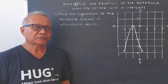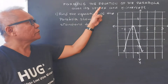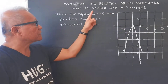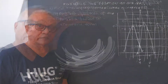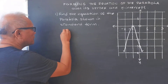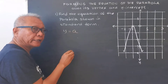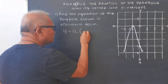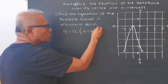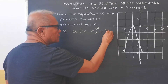Good day. Today we are going to study how to form the equation of the parabola if its vertex and y-intercept are given, using the vertex form of the parabola. So we have y is equal to a, and then x minus h to the second power, plus k.